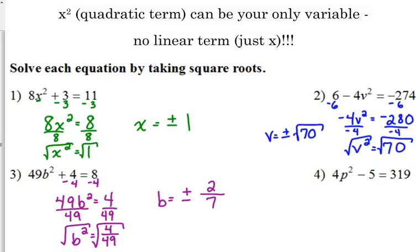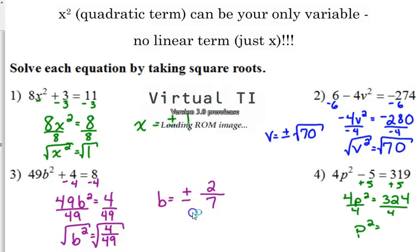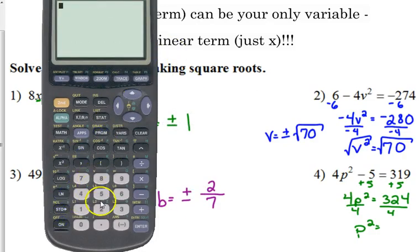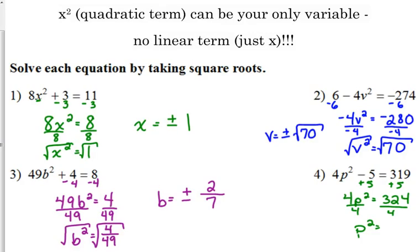And then the last one here, 4p squared minus 5 is equal to 319. Add 5, so p squared is equal to 324. Divide by 4. That's evenly divisible. 324 divided by 4 is 81. p squared is equal to 81. Take the square root of both sides. So p is plus or minus 9.